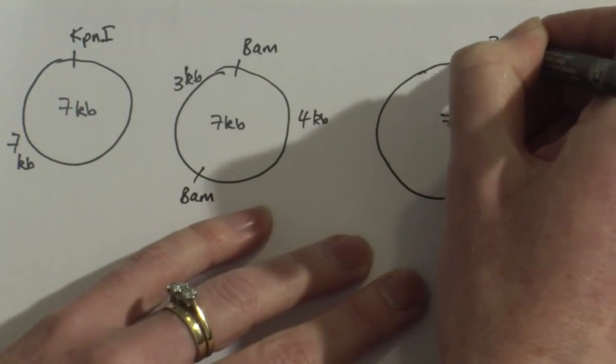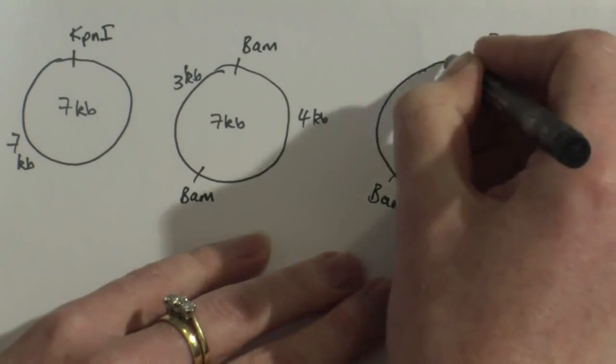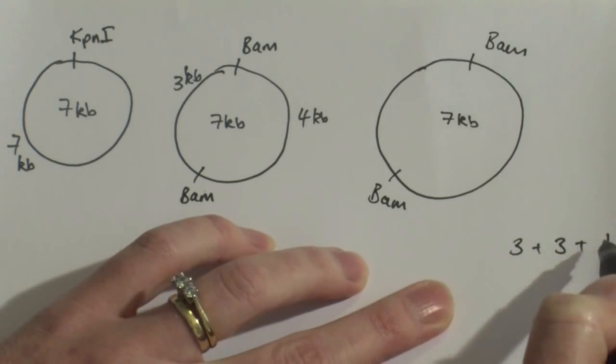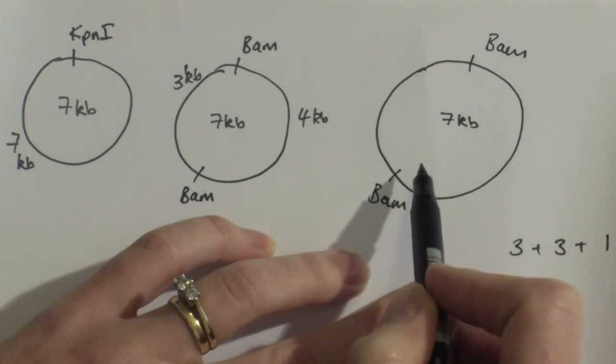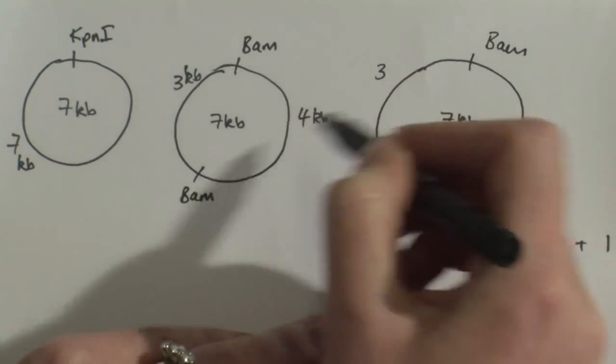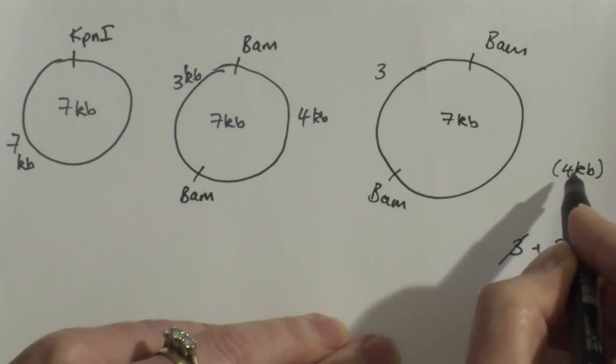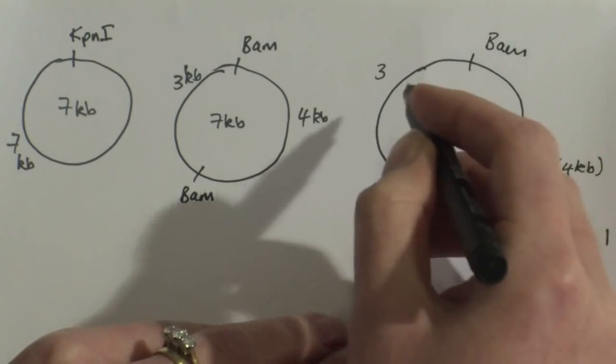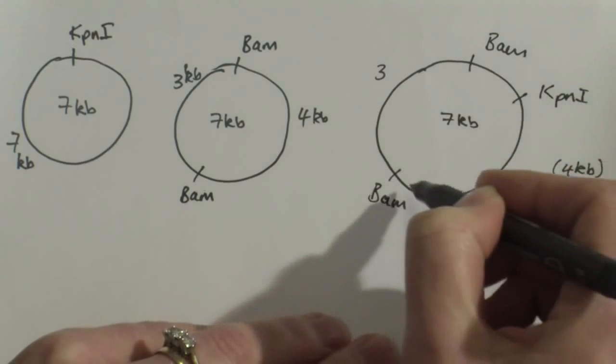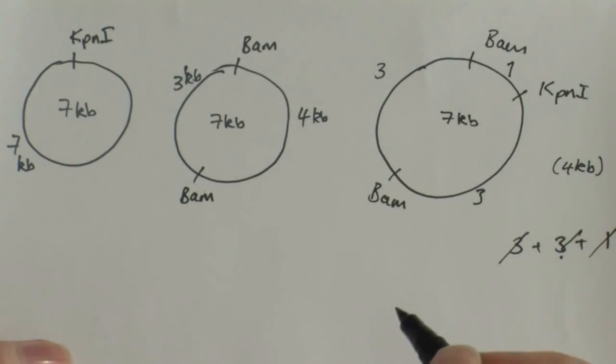On this plasmid I want to see where BAM cuts and I want to see where KPN1 cut in relation to each other and how I will generate these bands here. So my BAM is going to cut here and here and that still gives me a 4KB band here and my 3KB band here. Now the bands I got from my double digest was a 3KB, a 3KB and a 1KB. So how can I imagine where the KPN1 cut to give me these bands? Well I've already got this 3KB here, this BAM to BAM was 3KB. So that's one of these taken care of. And what's left over here was 4KB and I need to split my 4KB into 3KB and a 1KB. So I can imagine that my KPN1 cuts here, splitting this 4KB into a 1KB and a 3KB. And that's all the bands I saw on the gel resolved.